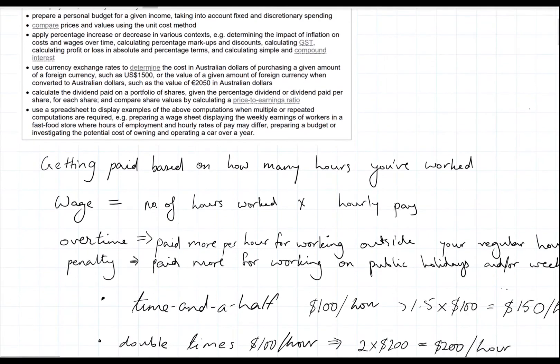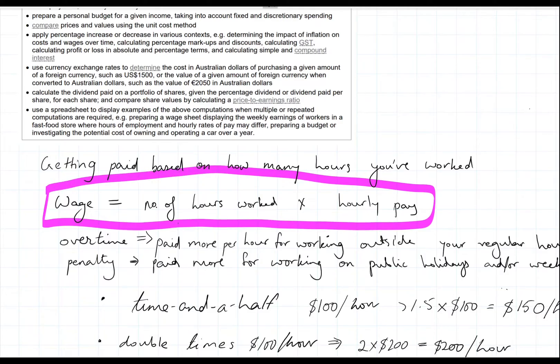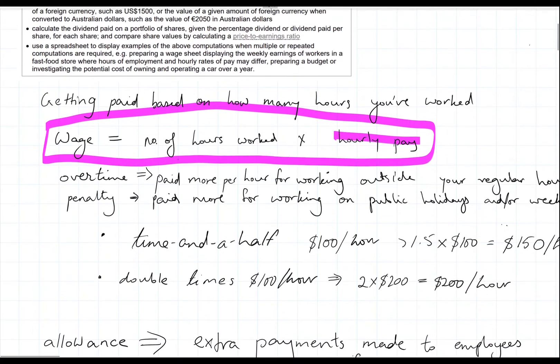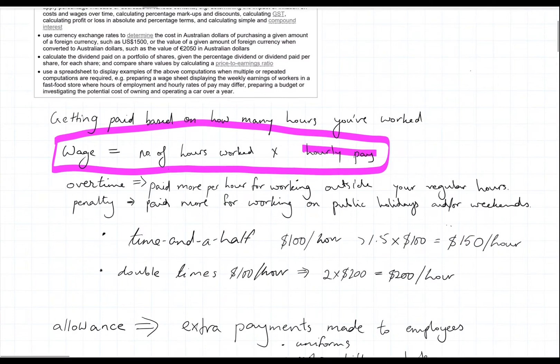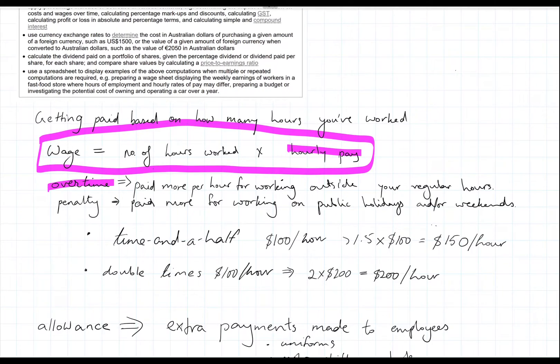Okay, so with hourly wage, you're getting paid based on how many hours you've worked. So your wage is essentially number of hours worked times your hourly pay. And your hourly pay can go up, say for example if you do overtime.